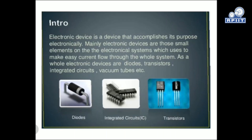Basically, an electronic device is a device that accomplishes its purpose electronically. Electronic devices are those small elements in an electronic system which are used to make current flow easy throughout the whole system. They provide a medium for the flow of current from one point to another.